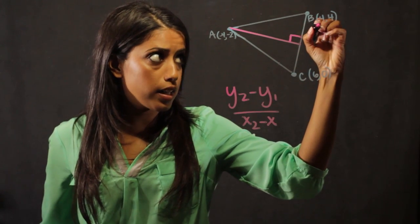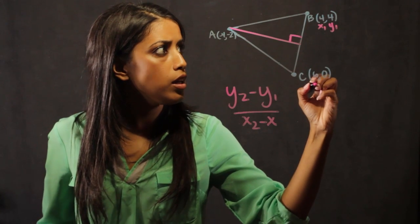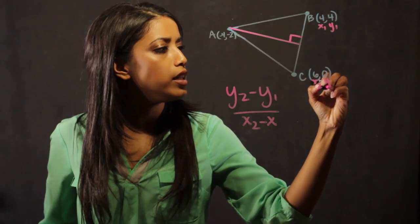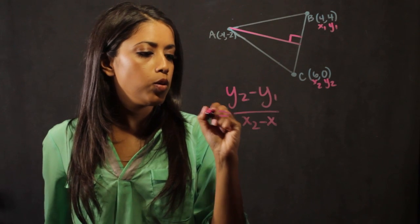We know that slope is equal to y2 minus y1 over x2 minus x1. So I take these points, I let this represent x1, y1, this point x2, y2, and I plug these numbers into this formula here, which is slope.